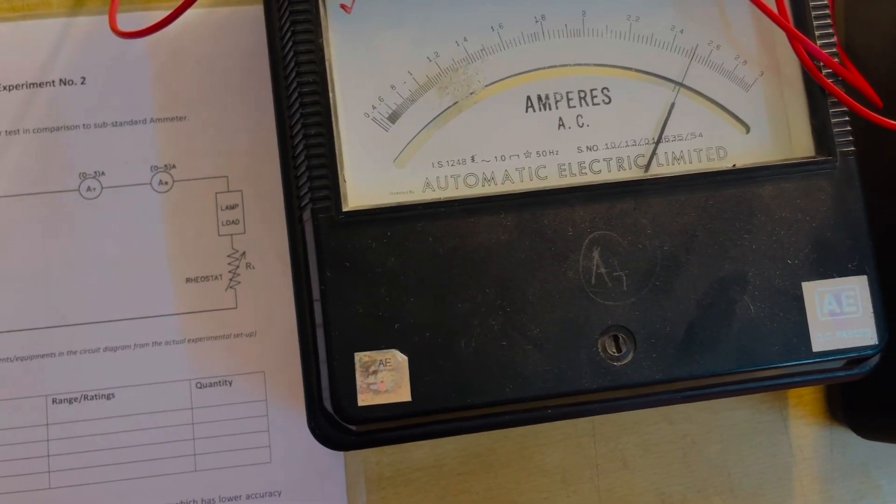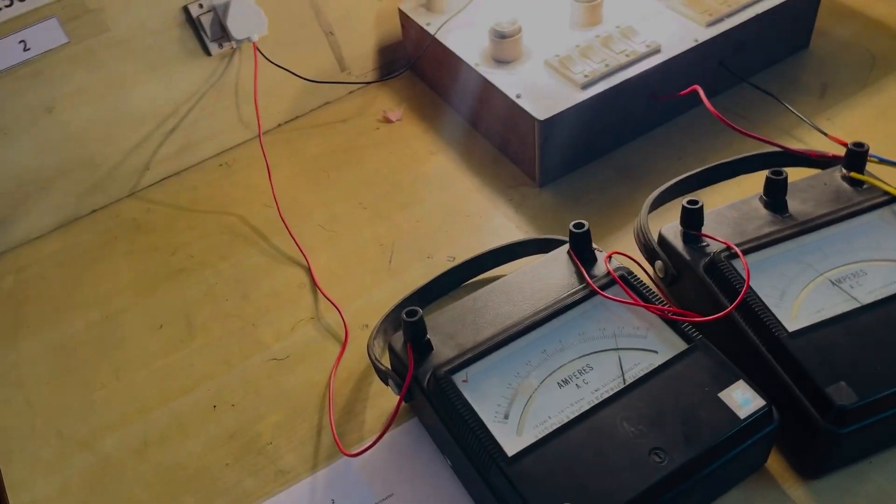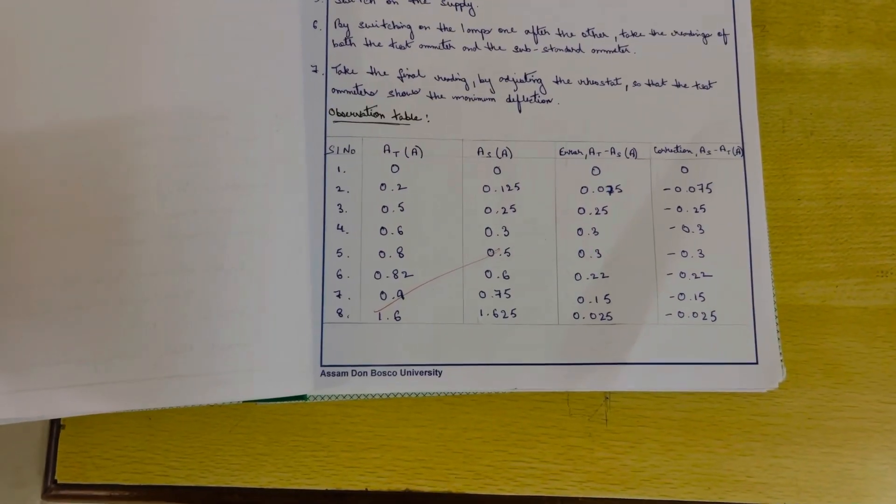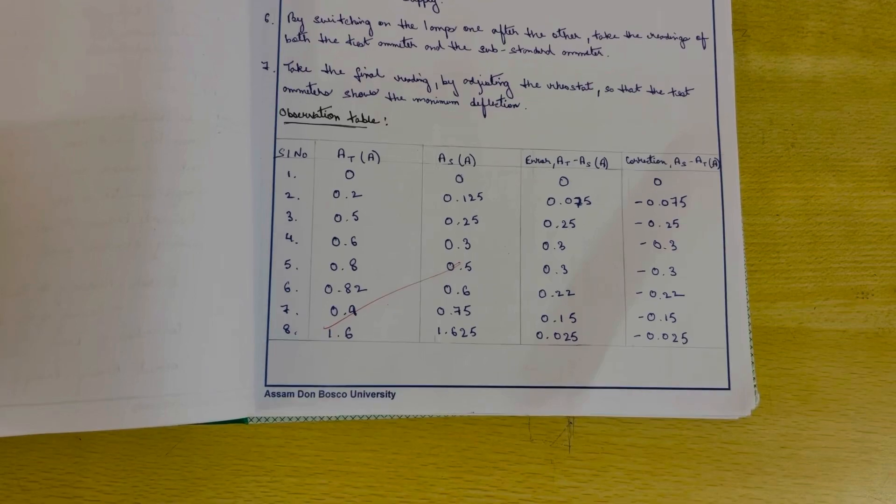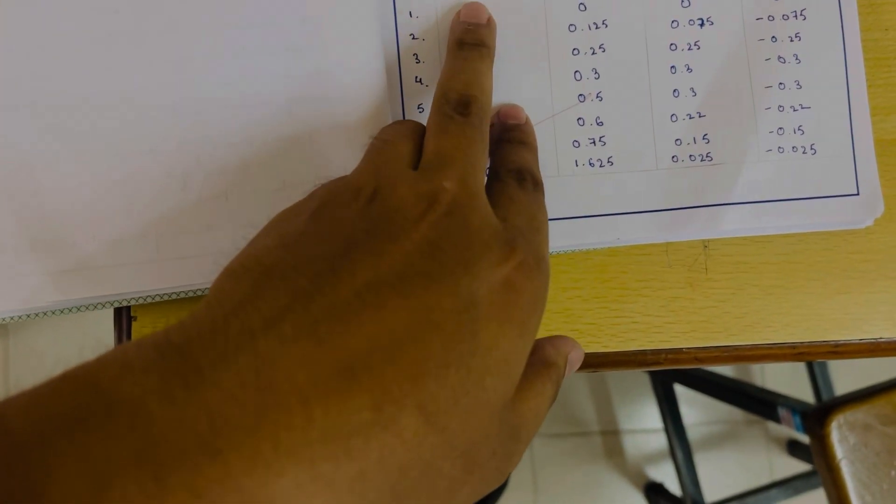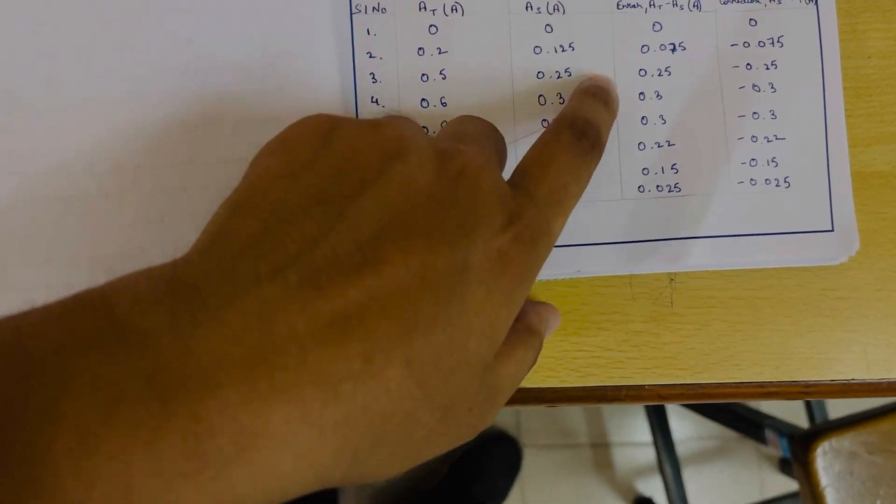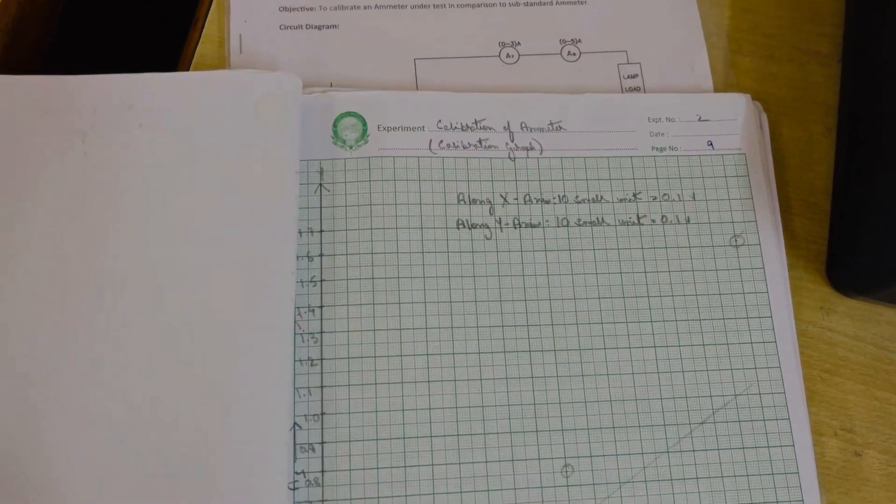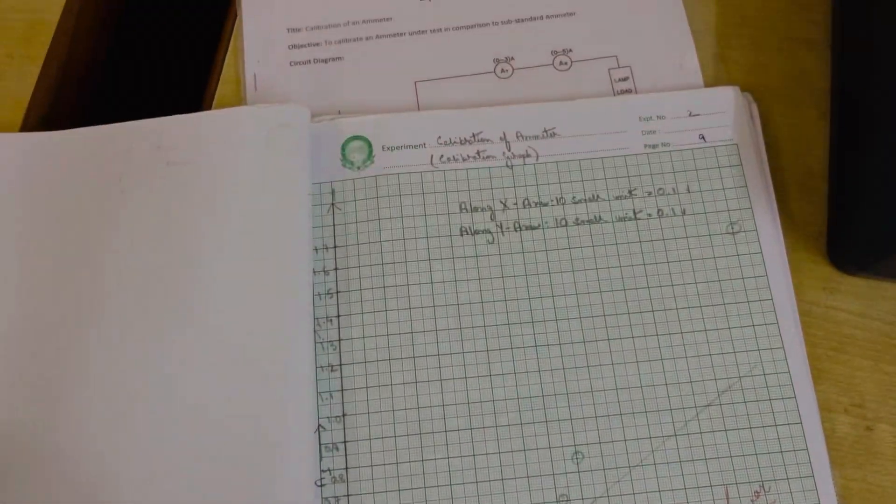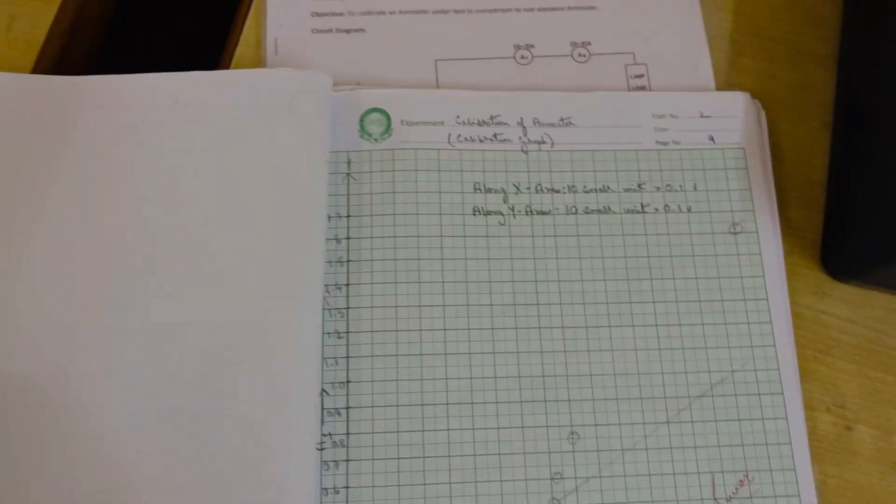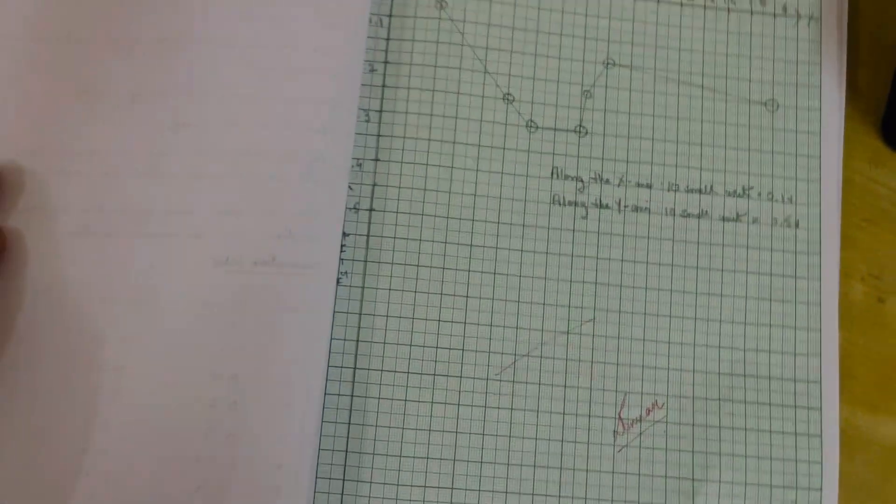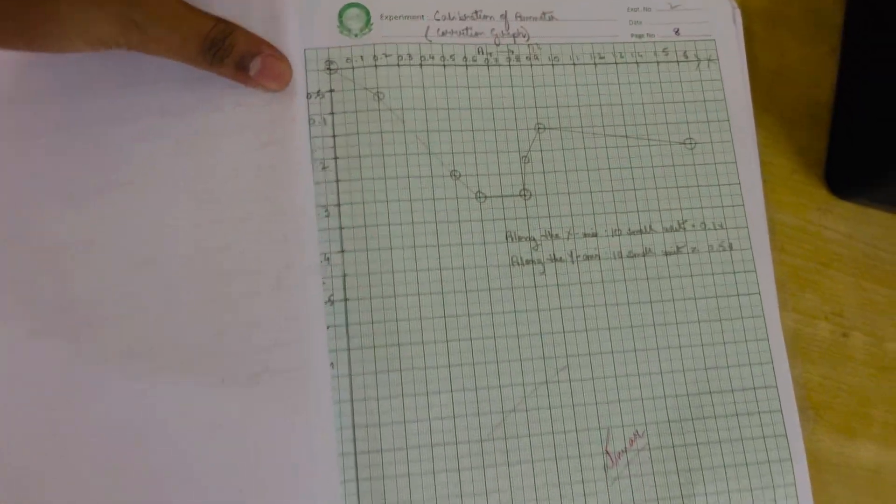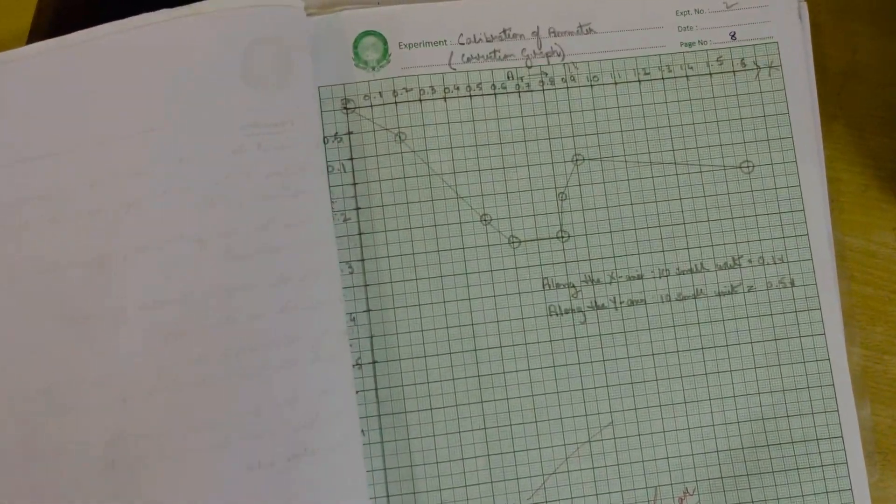This is the observation table. Here we have the AT value, the AS value, error, and correction. This is the calibration graph between AT and AS. And this is the correction graph between AT and the correction value.